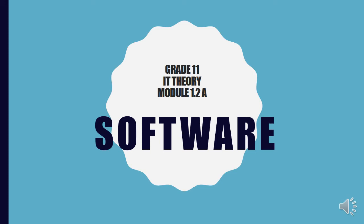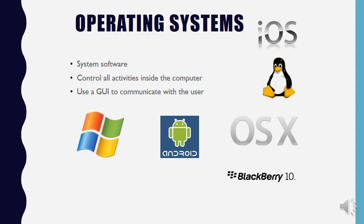Grade 11 IT theory, module 1.2a: software and operating systems. Every computer needs to have an operating system — without it, the computer is not going to work. You're probably familiar with Windows 7 or Windows 10, or if you have a MacBook you use OS X. The operating system is system software, as opposed to application software. It controls everything that goes on inside the computer and uses a GUI — a graphical user interface — so you see pictures on the screen and click on them.